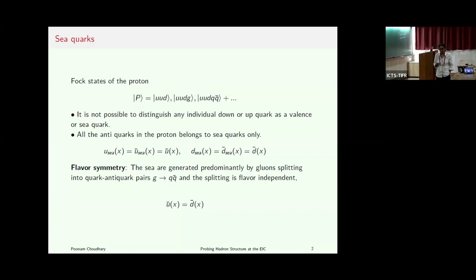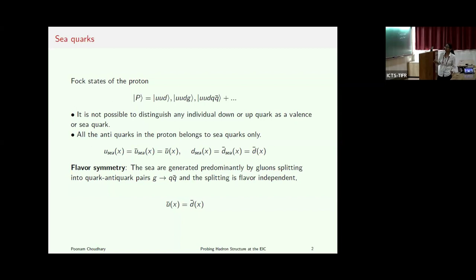When we say that the proton has valence quarks, there are only quarks, not anti-quarks. When we say quarks, we cannot distinguish whether it's a valence quark or sea quark, but anti-quarks are sea quarks only. So in the sea sector, it is assumed that U of sea is the same as U-bar of sea, and we generally use the convention U-bar of X.